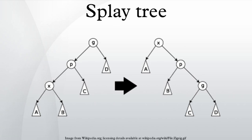Zig step. This step is done when P is the root. The tree is rotated on the edge between X and P. Zig steps exist to deal with a parity issue and will be done only as the last step in a splay operation and only when X has odd depth at the beginning of the operation.